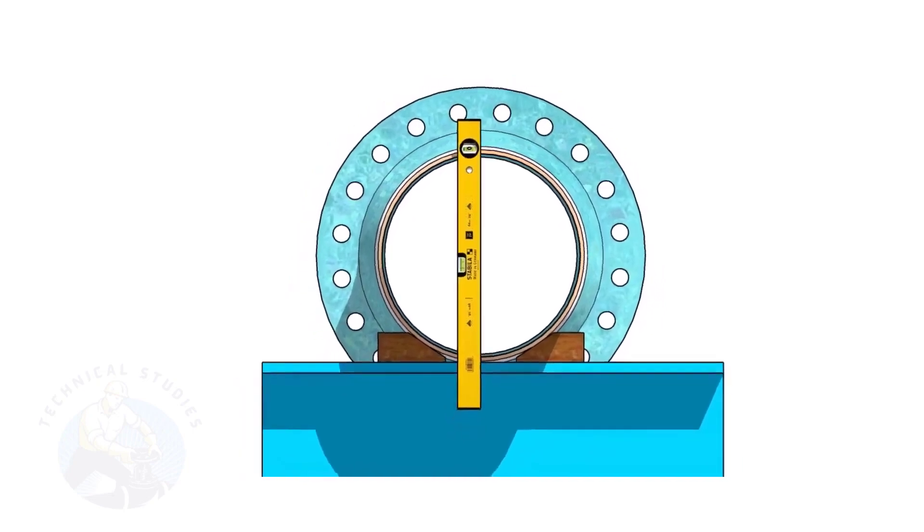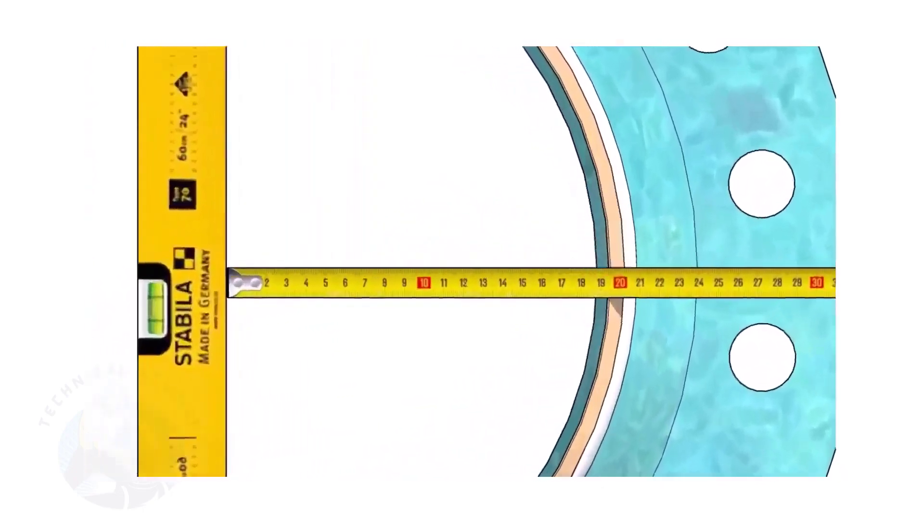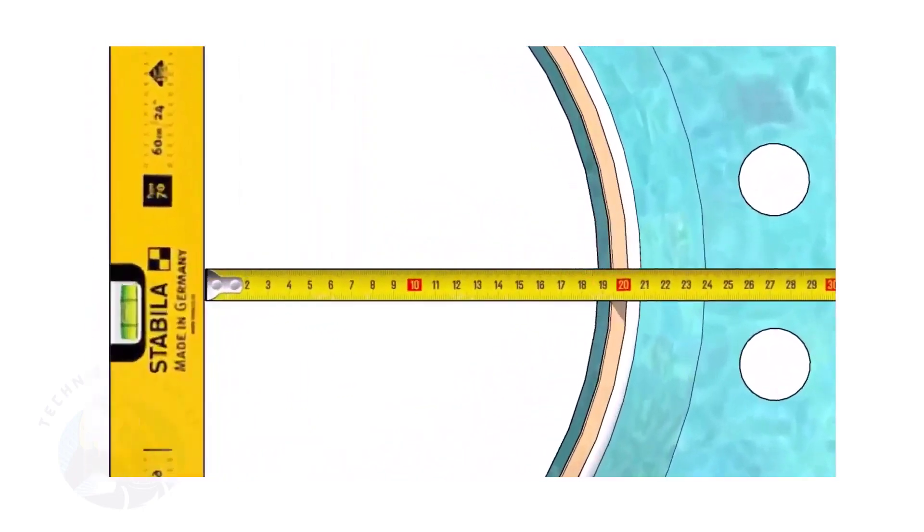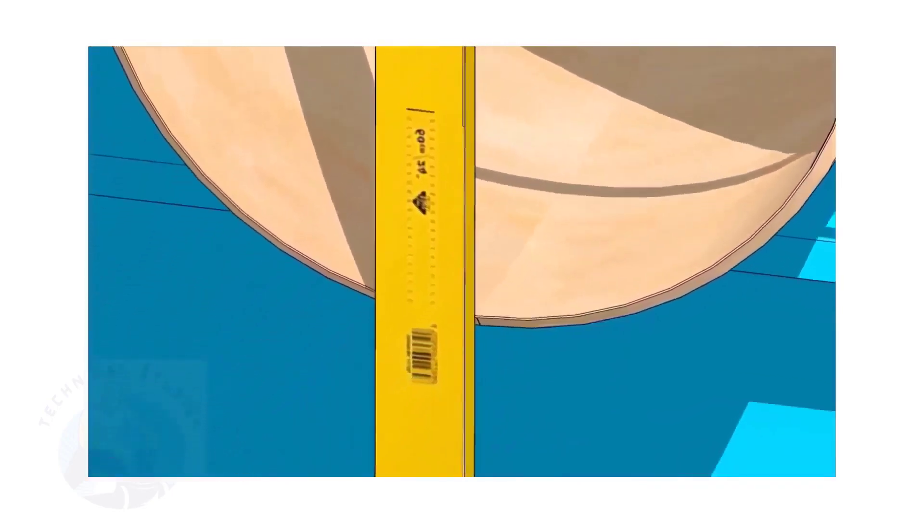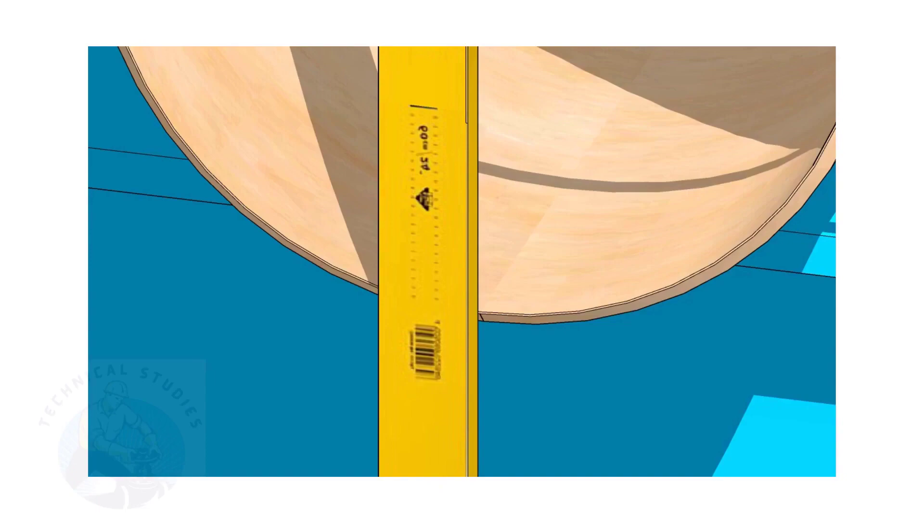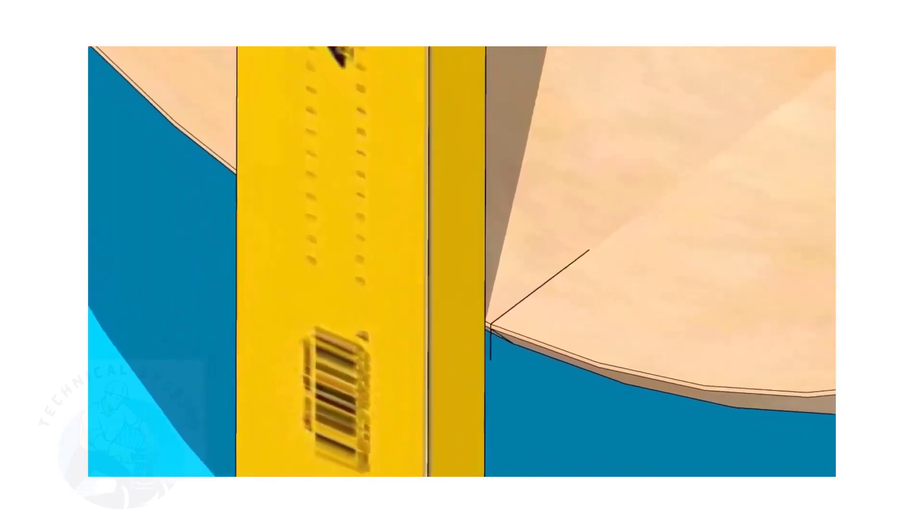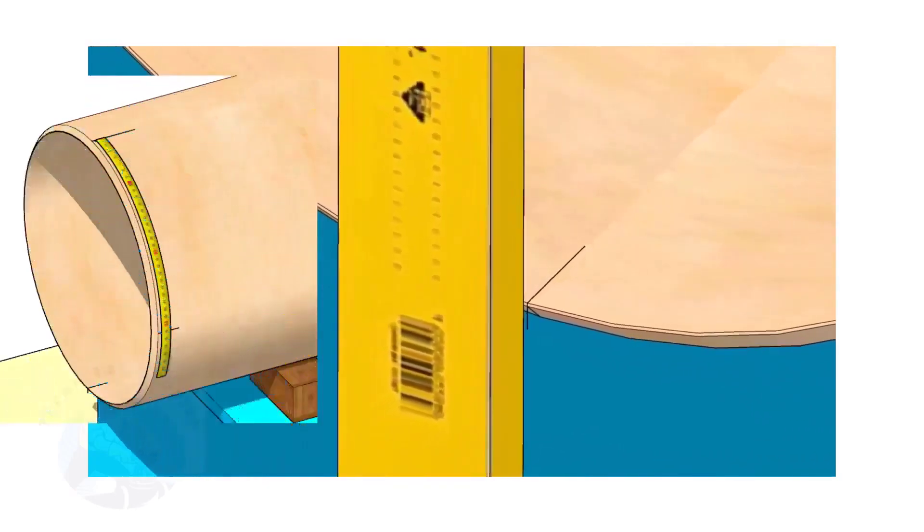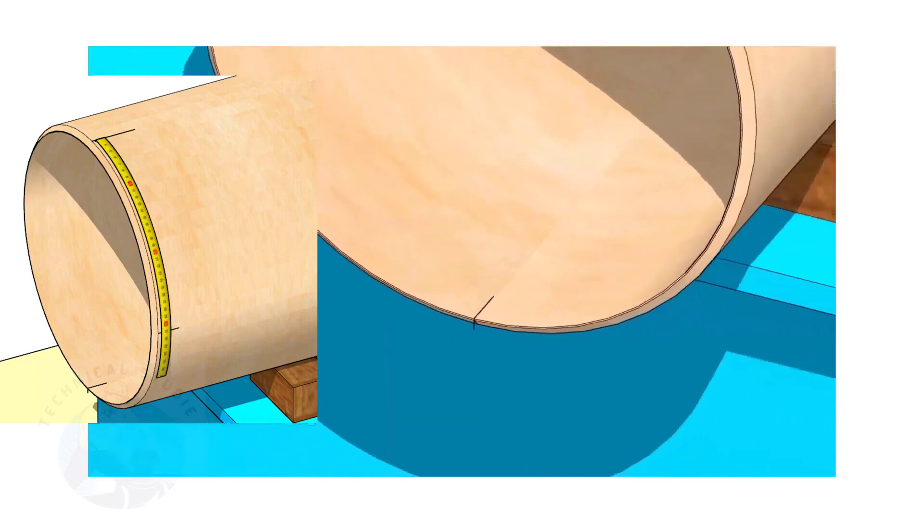Hold the spirit level vertically and transfer the top center mark to the bottom side as shown. Mark the quarter circumference on both sides of the pipe.